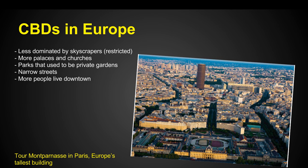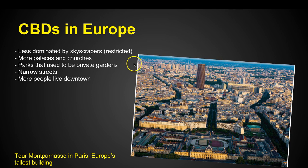Looking at CBDs in Europe — how are they different from the United States? They're less dominated by skyscrapers because skyscrapers are restricted. When the Tour Montparnasse was built in Paris — Europe's tallest building — people threw a fit because you had this beautiful traditional historic landscape and then they built this tower that didn't match the layout and history of the city. So they put restrictions on it in Europe, whereas in the United States we're unrestricted and can build skyscrapers as tall as we want.